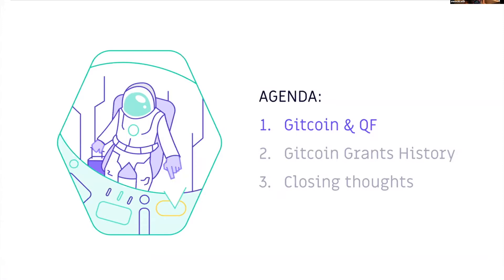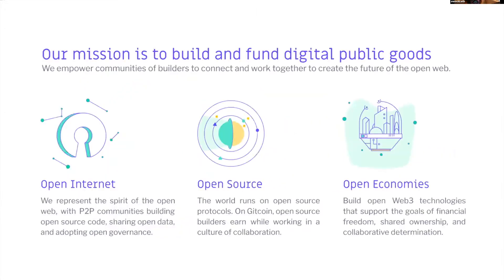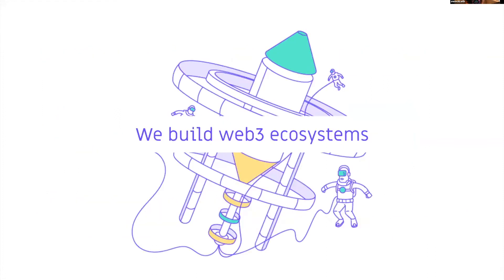I'm going to tell you a little bit about Gitcoin Grants and quadratic funding. I'm going to tell you about Gitcoin Grants' history running 12 rounds of quadratic funding. And then we'll end with some thoughts about the future of quadratic funding, what we've learned, and how that intersects with Gitcoin's mission. Our mission is to build and fund digital public goods, and empower communities of builders to work together to create the future of the open web.